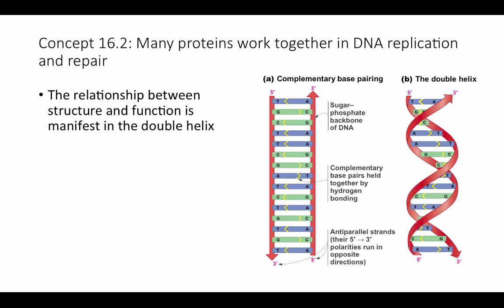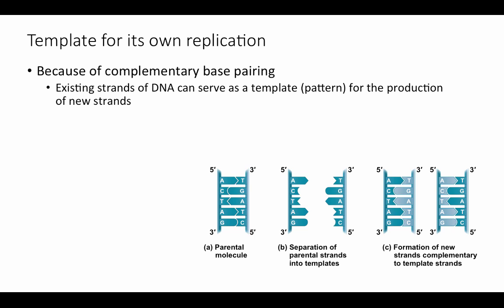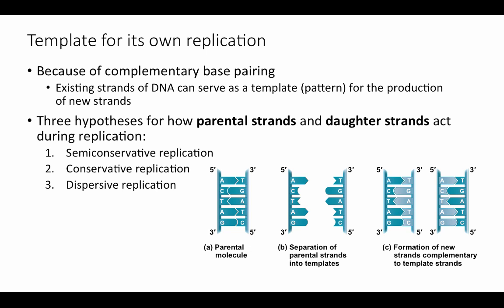Now let's think about how this structure makes DNA ideal for replicating itself — serving as a template for its own replication. This is probably the best example in all of biology of the beautiful relationship between structure and function. Watson and Crick noted that specific base pairing immediately suggested a possible copying mechanism: the existing strands of DNA can be separated from each other and each can serve as a template for the production of a new complementary strand.